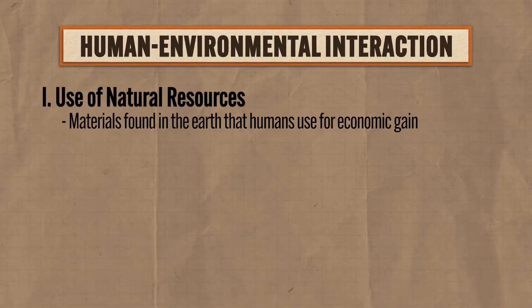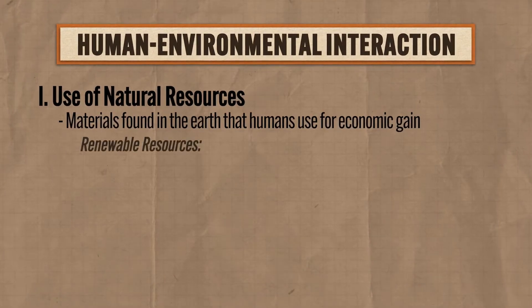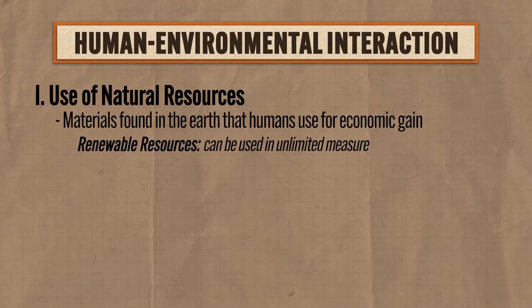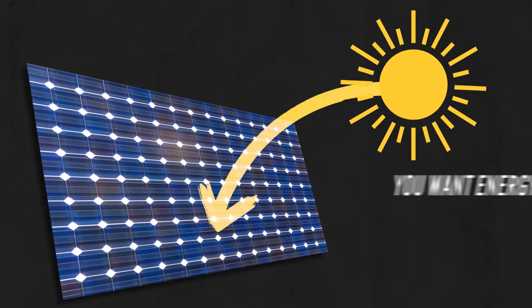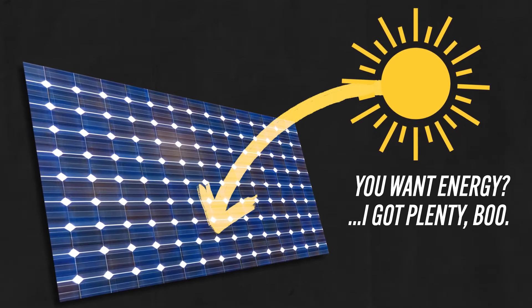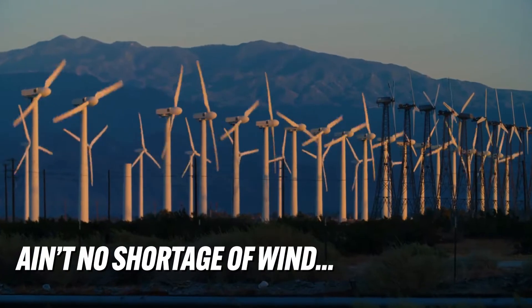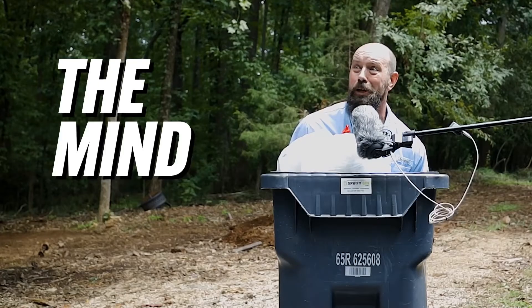There are probably some resources on the earth which are just useless for humans, but for the most part we've found a way to generate prodigious amounts of boom-boom from most of the earth's resources. Within this category there are two kinds of natural resources. First, you've got renewable resources, which can be used in unlimited measure. For example, the sun is an unlimited resource — scientists tell us it's going to burn out in about 8 billion years, but we've got some time. With technologies like solar panels, the sun's energy can be converted into electricity. Wind is another example — there's no shortage of wind, and with turbines, wind can also be converted into electricity.